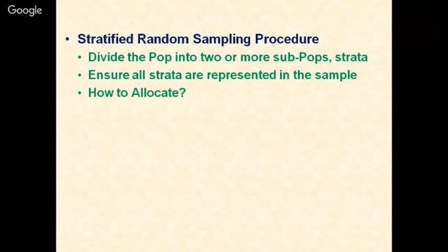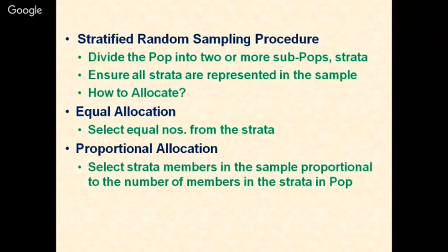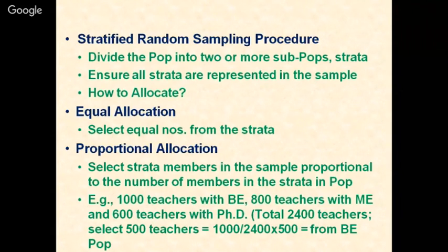Stratified random sampling procedure: divide the population into two or more sub-populations or strata and ensure all strata are represented. For allocation, you can use equal allocation — selecting an equal number from each stratum — or proportional allocation, selecting strata members proportional to their share of the total population. For example, with 1,000 teachers holding a BE degree, 800 with ME, and 600 with PhD — total 2,400 — and a desired sample of 500: from the BE stratum, select 1,000 ÷ 2,400 × 500 = approximately 208 teachers.